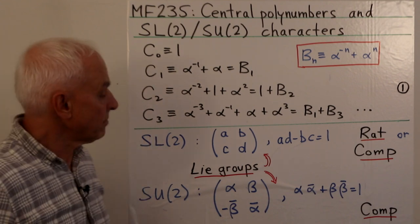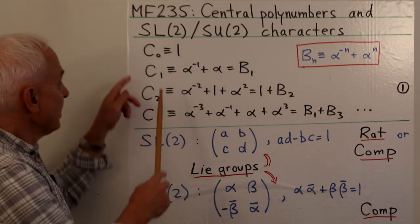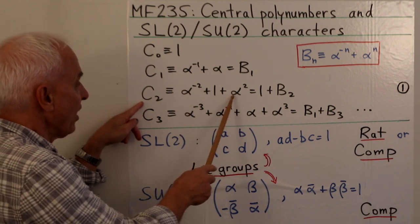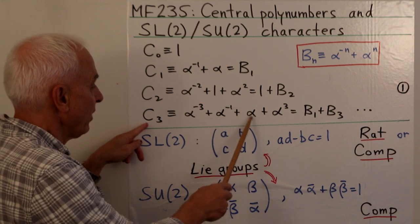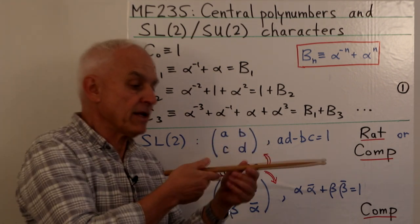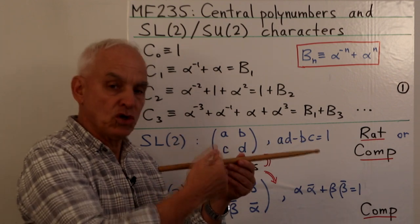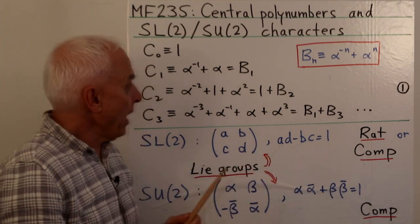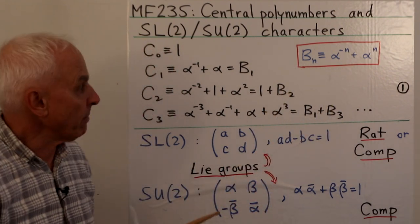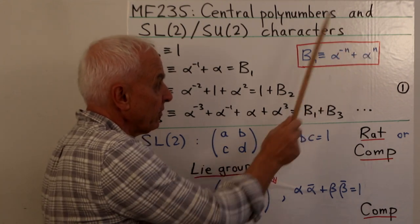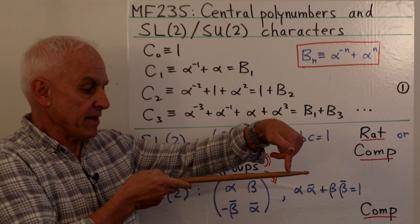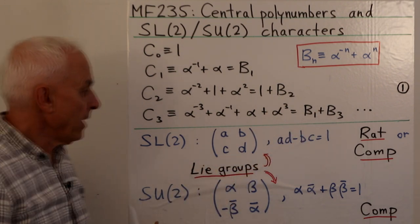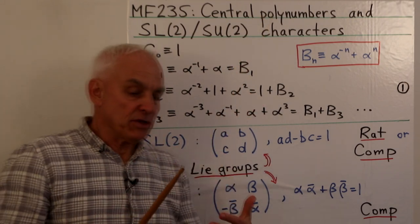The central polynumbers — or maybe central integral polynumbers — are: c₀ = 1, c₁ = α⁻¹ + α, c₂ = α⁻² + 1 + α², c₃ = α⁻³ + α⁻¹ + α + α³. Think of these as sequences of densities spaced two apart, symmetrically arranged around zero on the integral number line. In terms of symmetric polynumbers b_n, defined by α⁻ⁿ + αⁿ: c₁ = b₁, c₂ = 1 + b₂, c₃ = b₁ + b₃. Those are the algebraic objects we want to connect with.